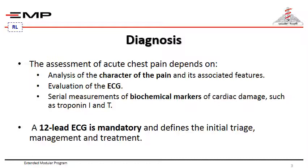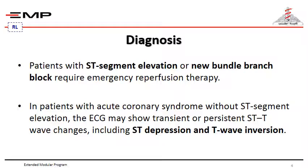Management and treatment of patients with acute coronary syndrome: patients with ST segment elevation or new bundle branch block require emergency reperfusion therapy. In patients with acute coronary syndrome without ST segment elevation, the ECG may show transient or persistent ST segment and T wave changes, including ST depression and T wave inversion.